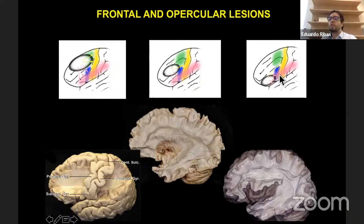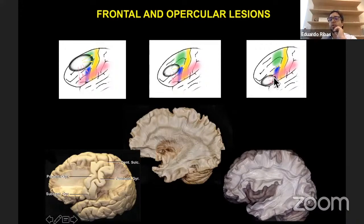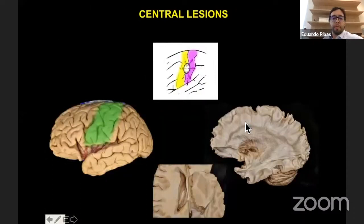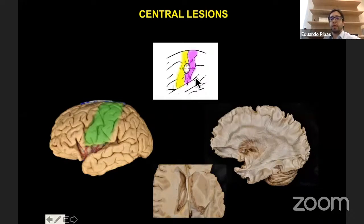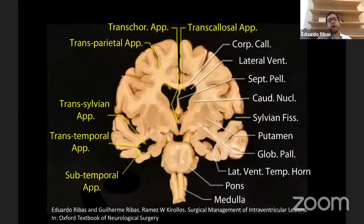The inferior frontal gyrus harbors the speech expression area of language, and the more posteriorly you go, the deeper into this area you get. Central lesions are always challenging — anterior to them lies the pyramidal tract, and posterior to them are sensory areas. Brain mapping is essential to avoid harming these very eloquent fibers.